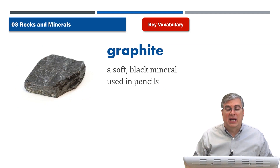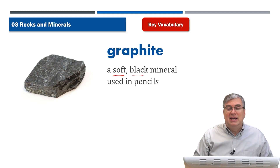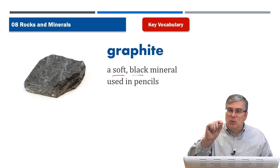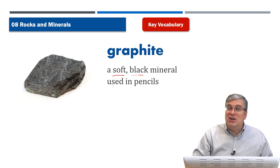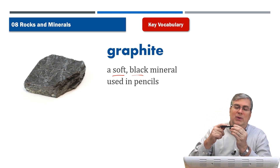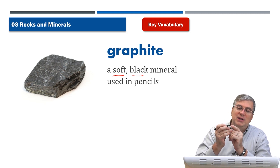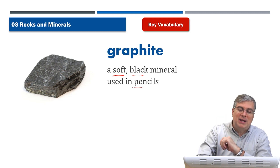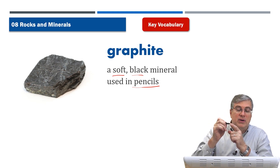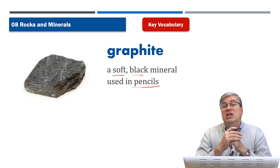Graphite is a type of mineral. It's soft, it's black, and it's not a hard rock — if you put some pressure on it, little pieces will break off. This is actually very useful: if you put wood around a piece of graphite so it doesn't mark your fingers, with the graphite sticking out the end, that is a pencil. When you write, you're rubbing the graphite mineral onto the paper and it stays there.